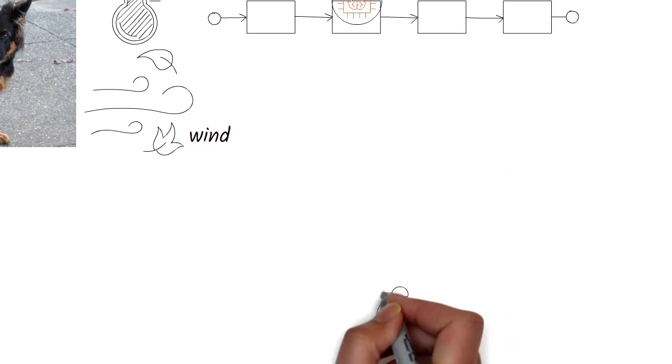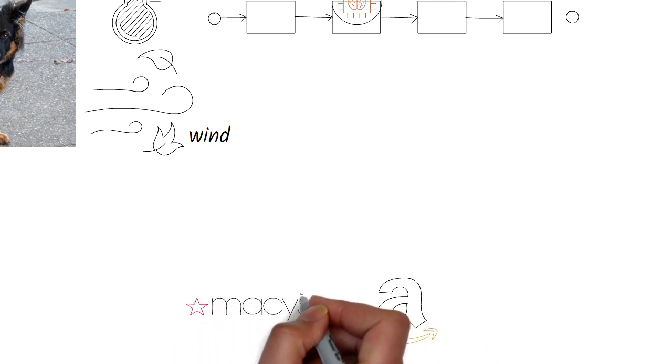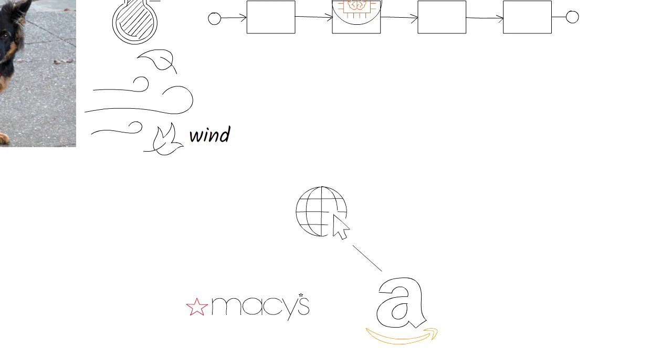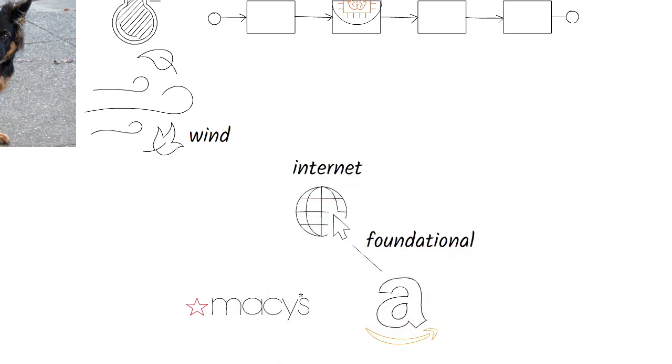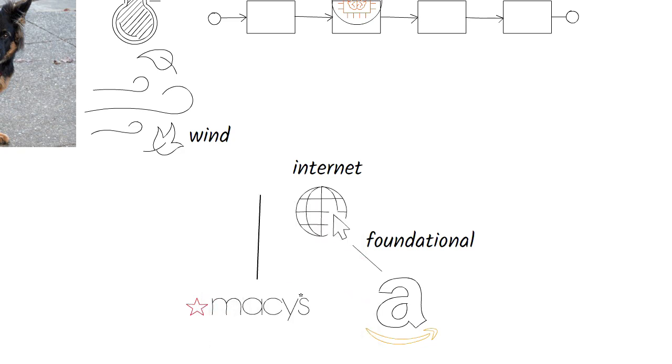But I also want to bring up how differently Amazon leverages the internet from say a Macy's. Amazon uses the internet as an integral part of its business model. If the internet did not exist, Amazon would probably not exist. Macy's on the other hand simply added the internet as one more channel to its outlets. It just happened to use the internet as an orthogonal technology. There's a huge difference between Amazon's use of the internet and Macy's use of it.